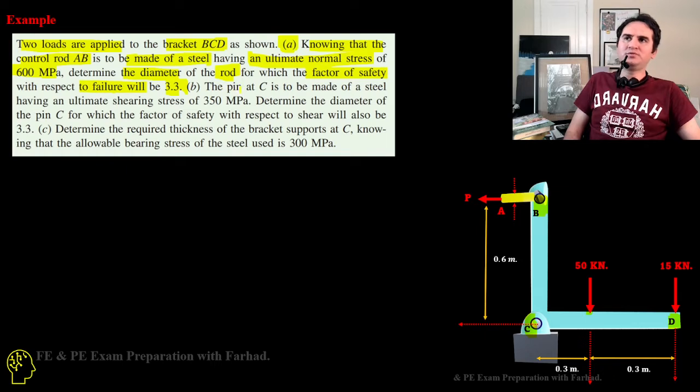In part B, if we know the pin at C is also made from steel having ultimate shearing stress this time of 350 MPa, we want to determine the diameter of our pin at C with the same factor of safety.